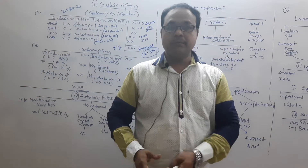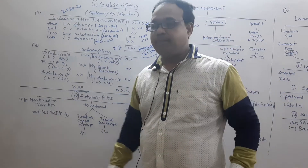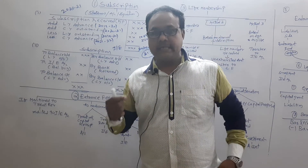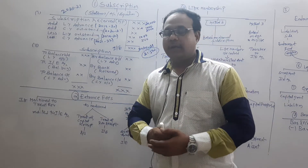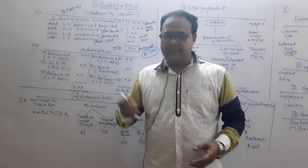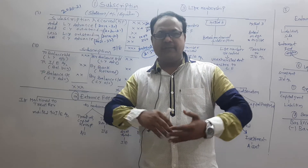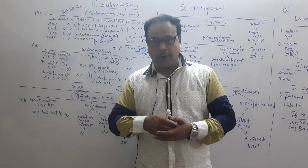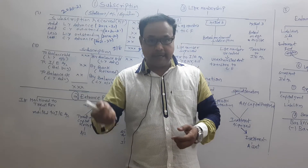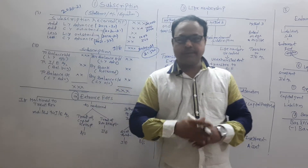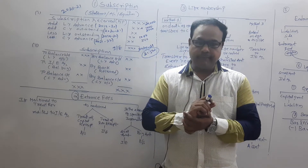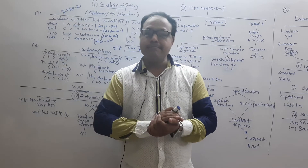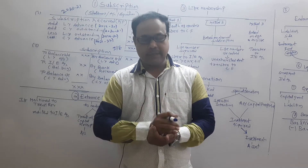Hi, this is Prashant Gupta. Non-profit organizations, Part 3. Subscription is a major source of income. How to treat the subscription in the income and expenditure account? The question may be asked in different ways — from the point of view of the receipts account, the income and expenditure account, or the balance sheet. Subscription is a major source of income contributed or subscribed by the members.